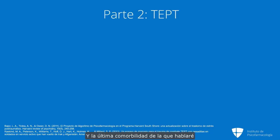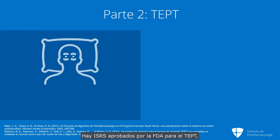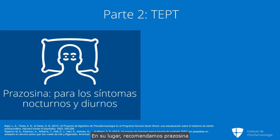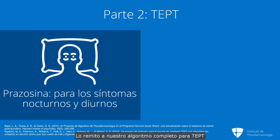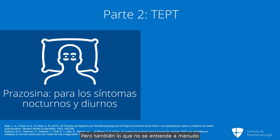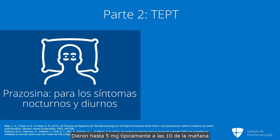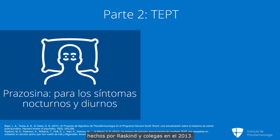The last comorbidity is post-traumatic stress disorder. There are FDA-approved SSRIs for PTSD, but we don't recommend them. We recommend prazosin instead as an add-on for insomnia, nightmares, and disturbed awakenings, supported by four placebo-controlled studies. Prazosin also works very well for daytime symptoms of PTSD — hyperarousal, hypervigilance, and irritability. In the fourth of those studies by Raskind and colleagues in 2013, patients were ramped up to five milligrams typically at 10 in the morning, with excellent results on those daytime symptoms.